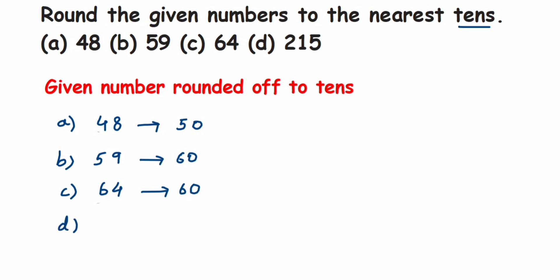The last one is 215. Same thing — we check the number in the ones place, which is 5. As I said before, if the digit is 5 or greater than 5, we add 1 to the digit in the tens place. In the tens place we have 1, so 1 plus 1 equals 2. The 2 in the hundreds place stays the same, the 1 in the tens place becomes 2, and the 5 becomes 0 — giving us 220. I hope it's clear. If you have further questions, drop a comment. Thank you for watching.